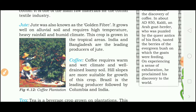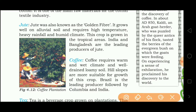Jute is also known as golden fiber — a useful fact for various exams. It grows well on alluvial soil and requires high temperature, heavy rainfall and humid climate. India and Bangladesh are the leading producers of jute.